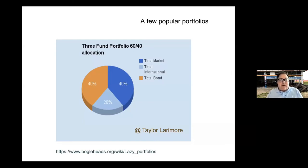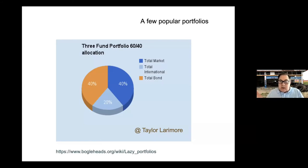Taylor Larimore isn't prescriptive about exact percentages. This example shows a 60/40 portfolio — 60% stocks, 40% fixed income or bonds. The three-fund split: 40% bonds (including CDs, cash, or whatever investable assets), 40% Total Market such as Vanguard Total Stock Market or similar, and 20% international equities. It does not include total international bonds, though most Vanguard all-in-one funds now include that automatically.